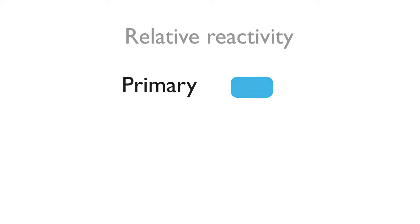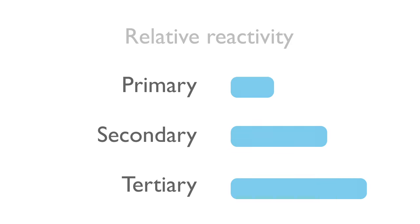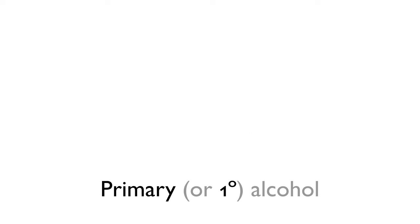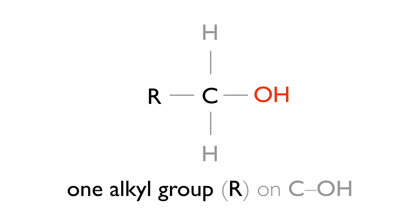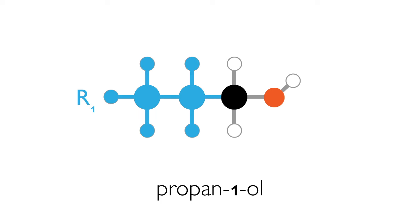Alcohols will react differently depending on the category they are in. In a primary alcohol, the carbon atom on which the OH group is bonded is itself attached to only one carbon chain or one alcohol group. Here is propan-1-ol. The OH is attached to the end carbon, and this carbon is attached to just one single chain of carbons.